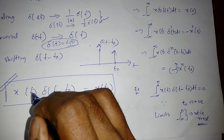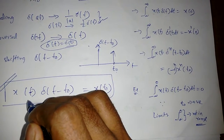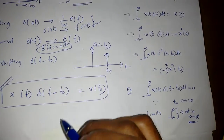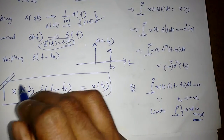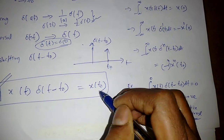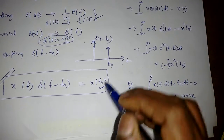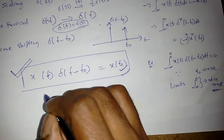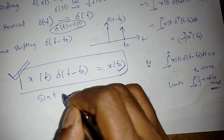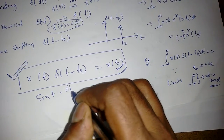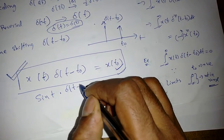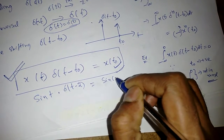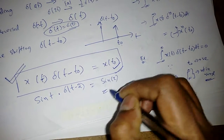One important property: if we multiply x(t) with delta(t - t₀), this will become x(t) evaluated at t equal to t₀. For example, sin(t)·delta(t - 2) gives sin(2) as the final expression.